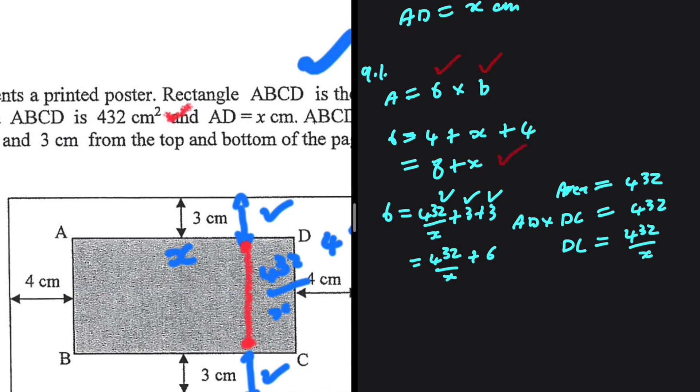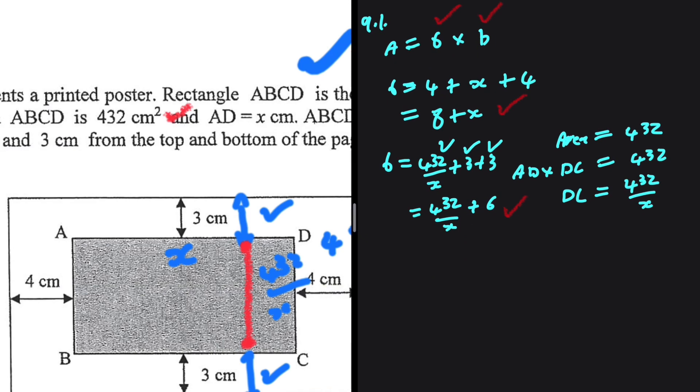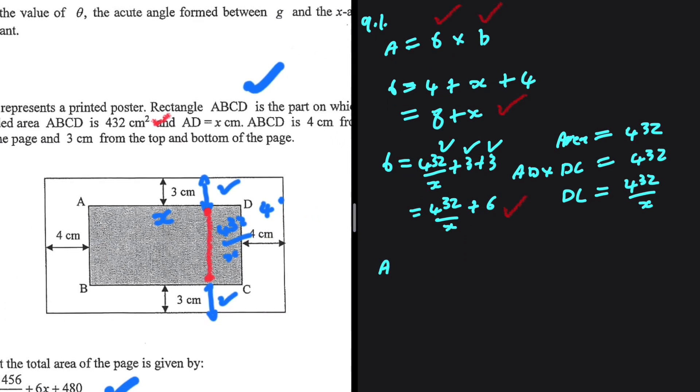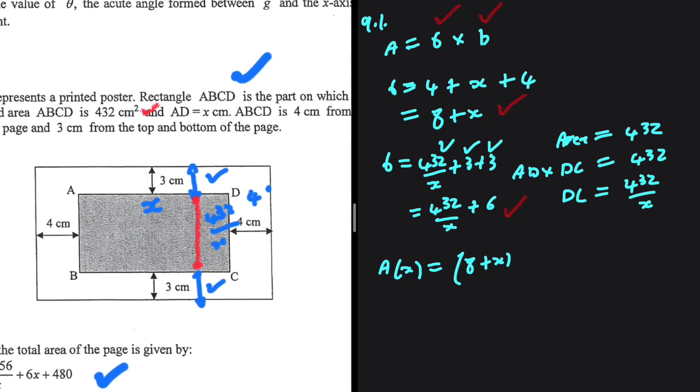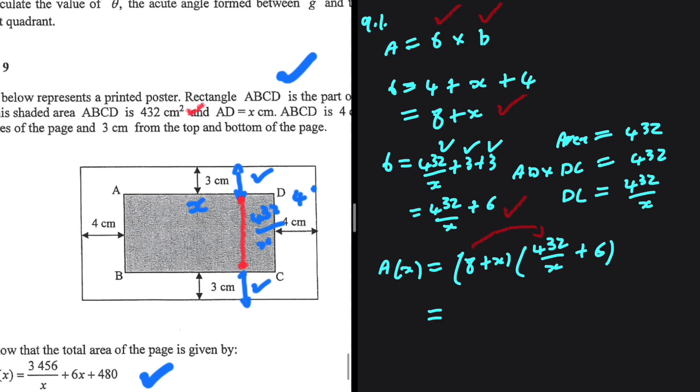This is the length and this is the breadth. The area of our poster in terms of x equals the length (8 + x) multiplied by the breadth (432/x + 6).